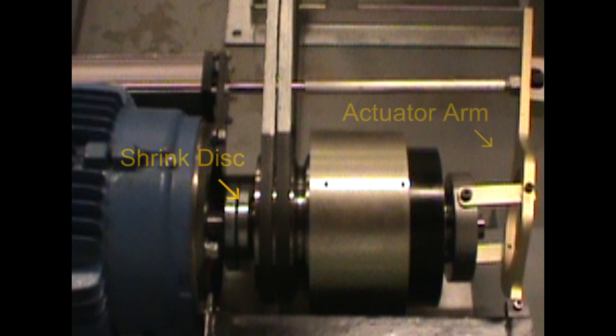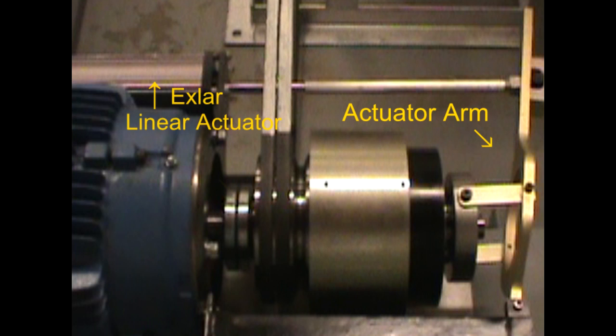An actuator arm is then attached to the rotor. For this installation, actuation of the rotor in and out of the magnet can is controlled by an XLR linear actuator.